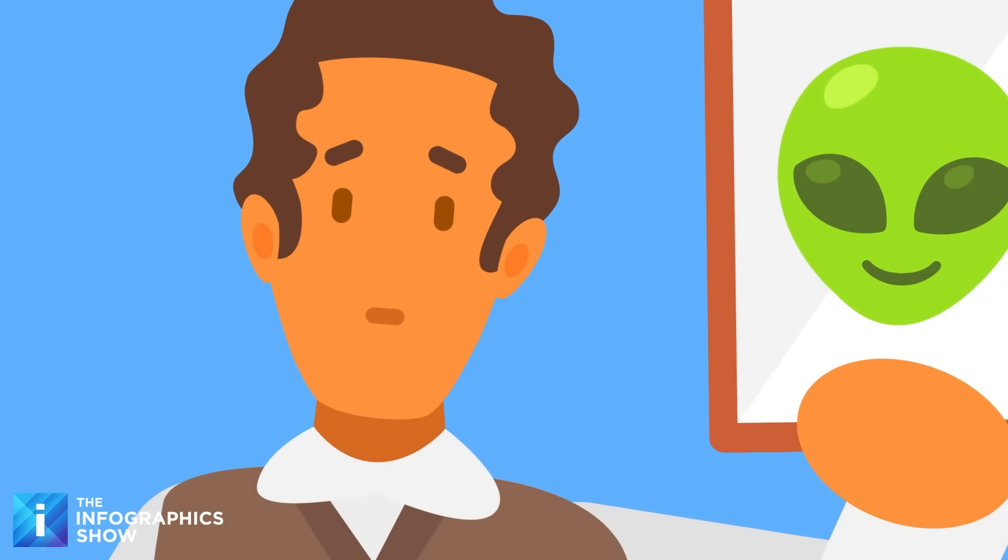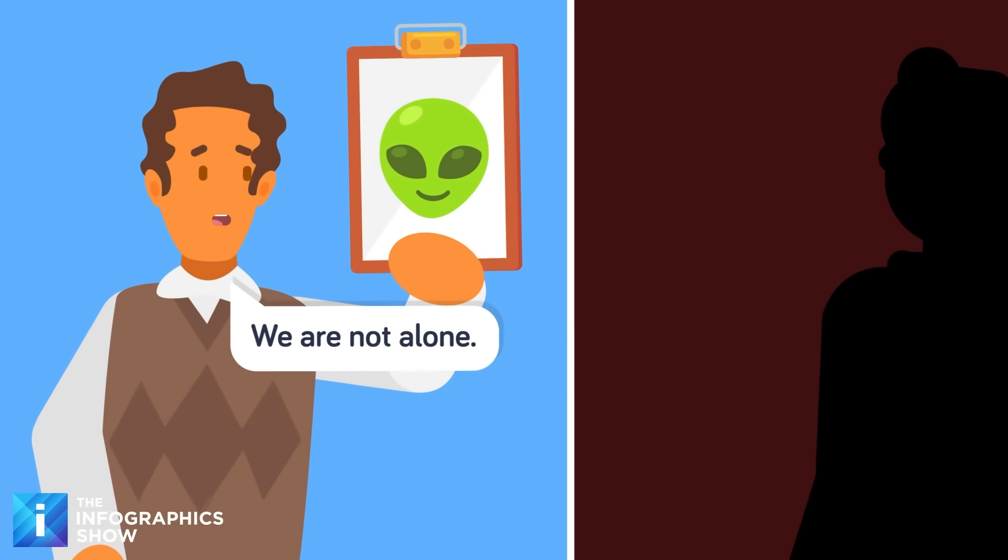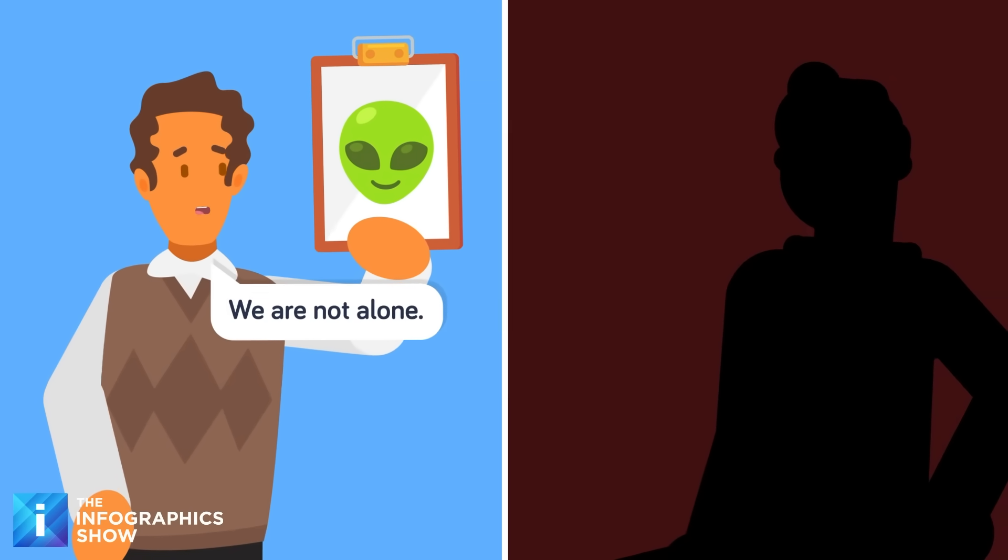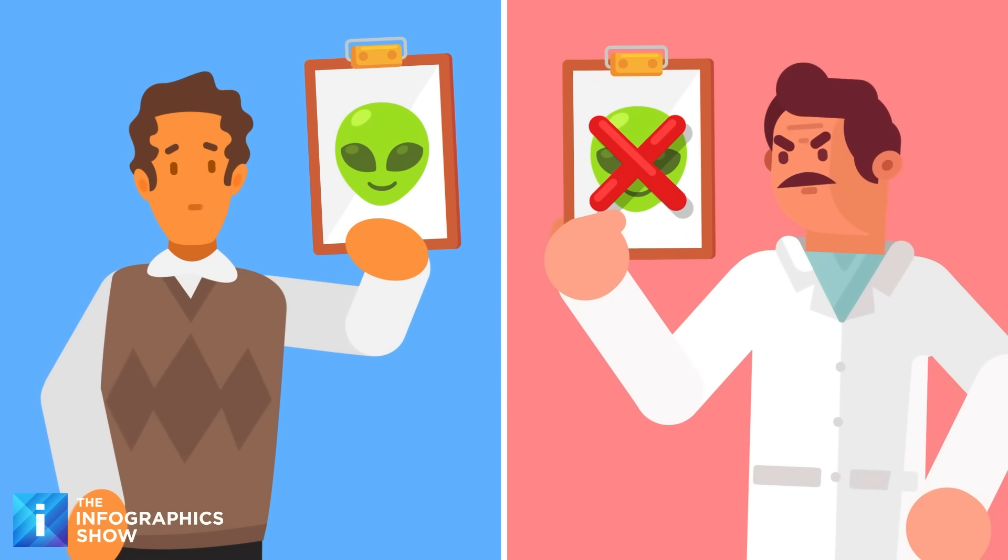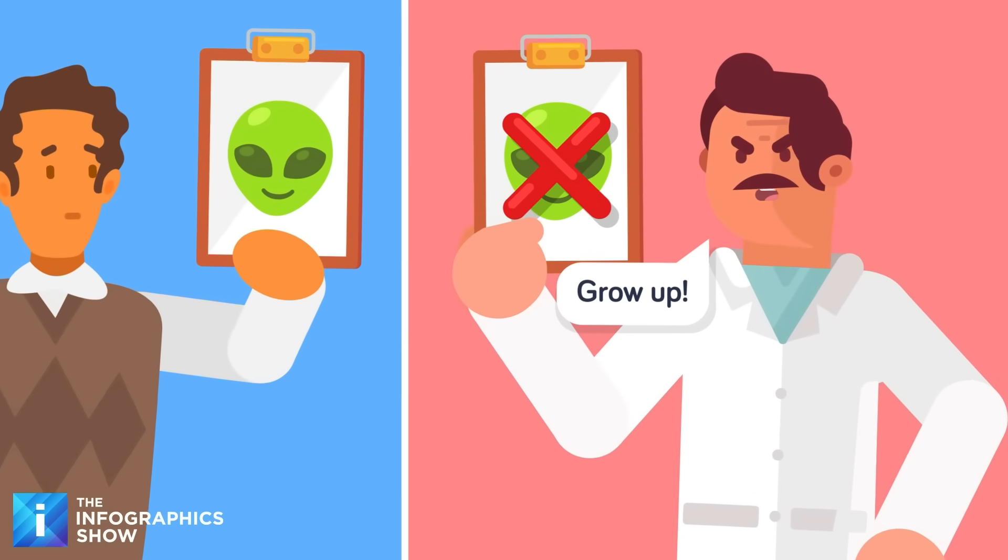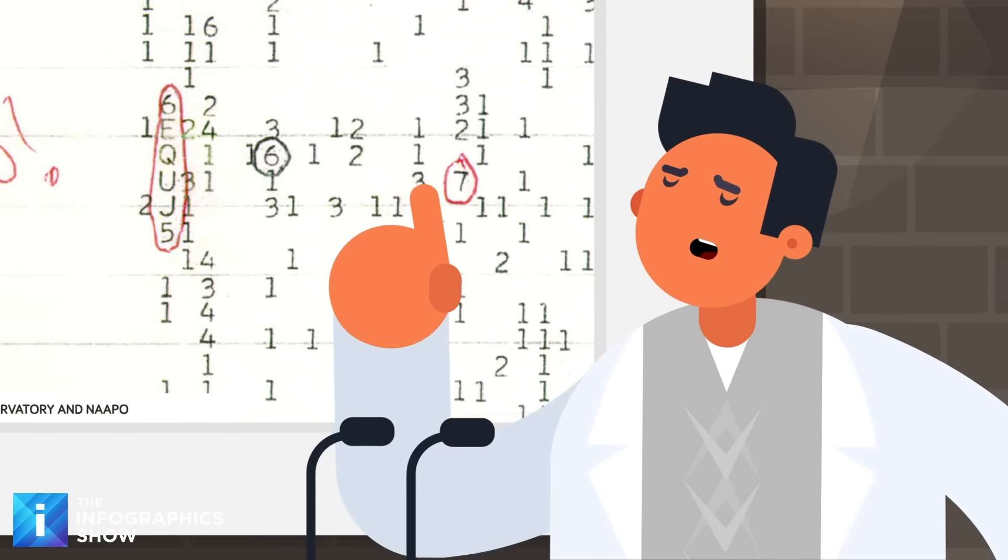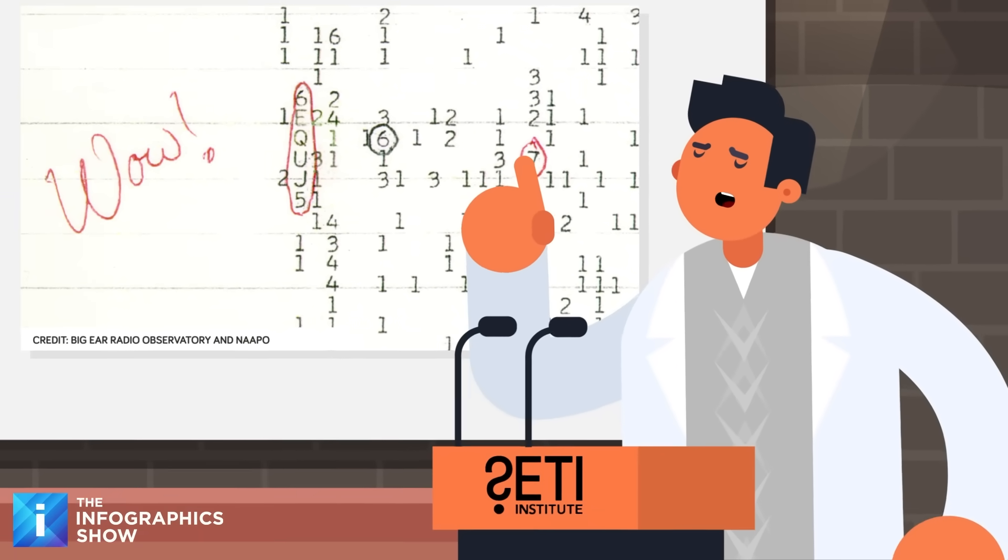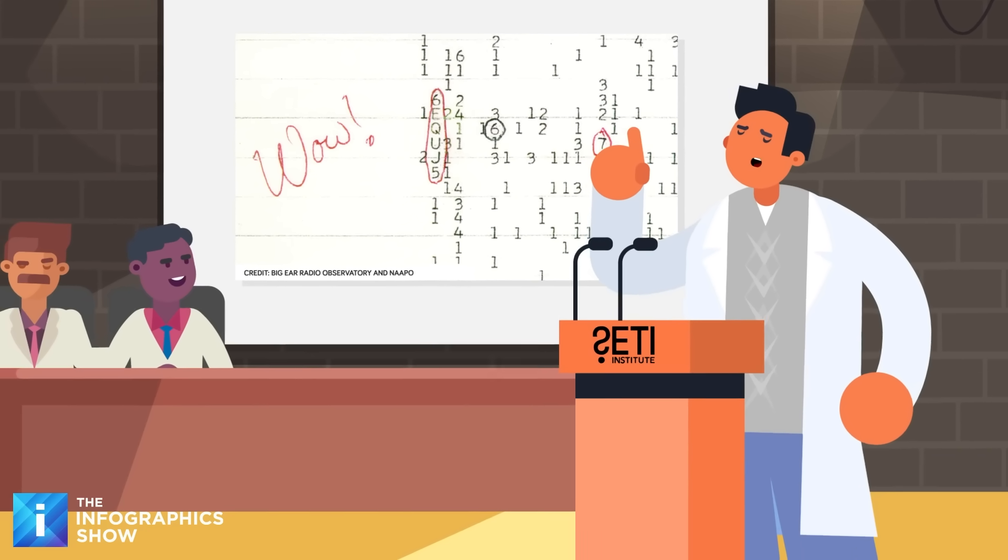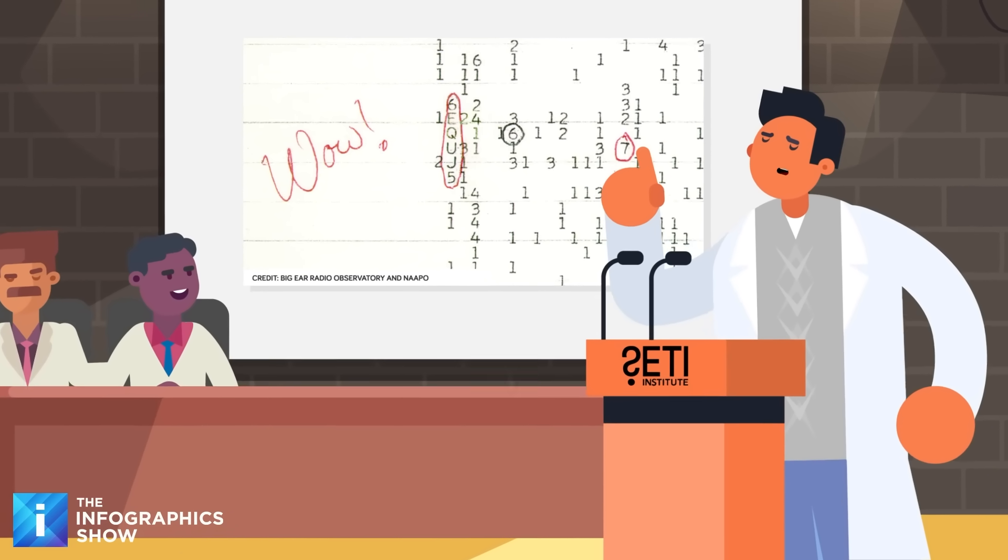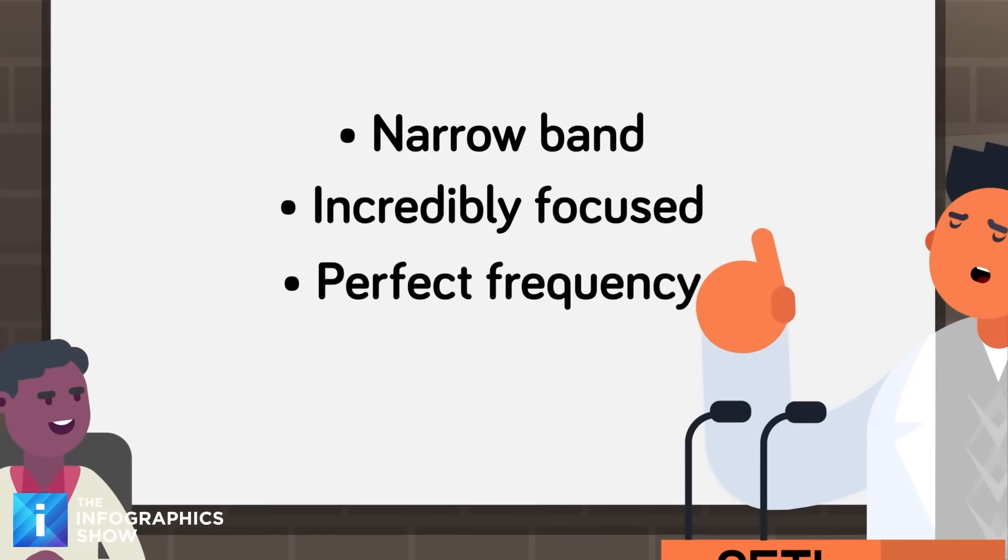The scientific community quickly split into different camps. Some researchers felt their hearts race with the possibility that humanity was no longer alone. Others maintained the kind of healthy skepticism that keeps science from turning into science fiction. Both sides had valid points, and both sides had their work cut out for them. For SETI researchers, the WOW signal was like winning the lottery. The 1420 megahertz signal had all the hallmarks of artificial origin that researchers had been dreaming about. It was narrow-band, incredibly focused, and transmitted at the perfect frequency.